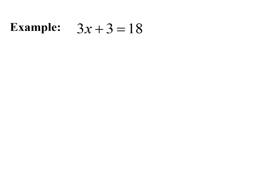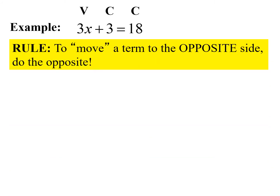Let's take a look at our first example: 3x plus 3 equals 18. On the left-hand side we have two terms — 3x and a positive 3 — and on the right-hand side we have a single term, 18. We want to identify each term as either having a variable or being a constant. A constant means it's just a numerical value, so 3x is our variable term, positive 3 is a constant, and 18 is a constant.